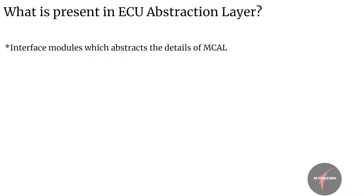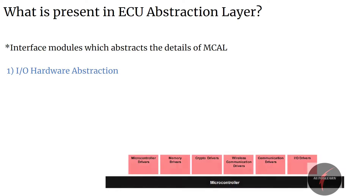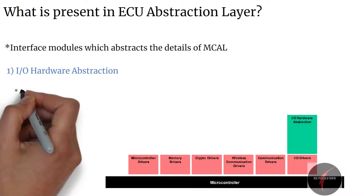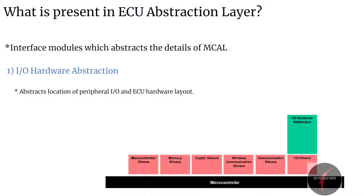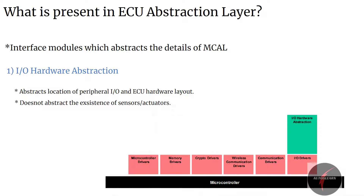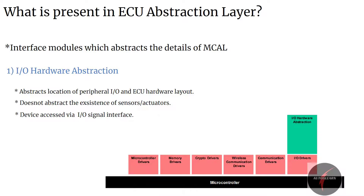Firstly, input-output hardware abstraction. The input-output hardware abstraction is a group of modules which abstracts the upper layer from the location of peripheral input-output devices, either on-chip or on-board, and the ECU hardware layout — for example, microcontroller pin connections and signal level inversions. It does not abstract the existing sensors or actuators but instead only abstracts the working of the functionality. Different input-output devices shall be accessed via input-output signal interfaces.